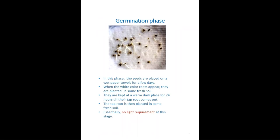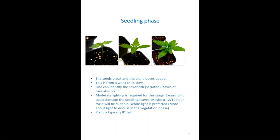Starting with the germination phase: you begin with some seeds and place them on a wet paper towel for maybe 24 hours in a warm place. After about 24 hours, the tap roots will come out. As soon as you see the tap roots, you can place them in fresh soil. At this stage, there is no light requirement — you just plant them and wait.